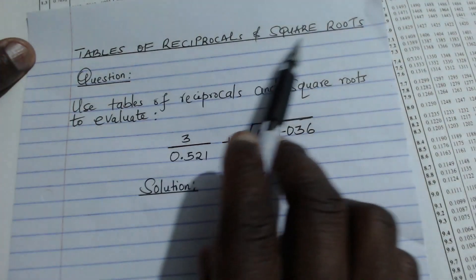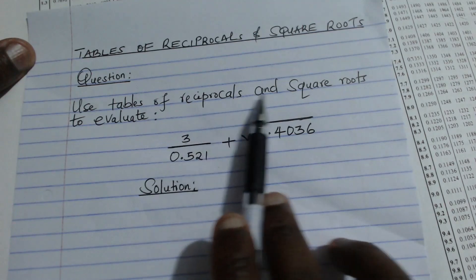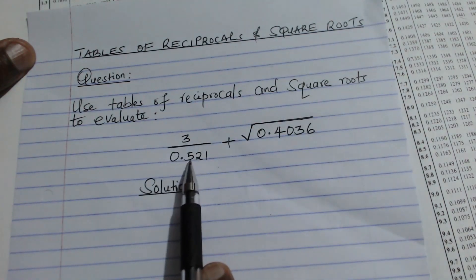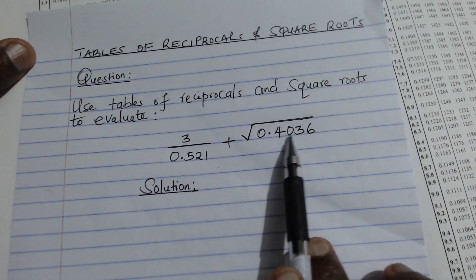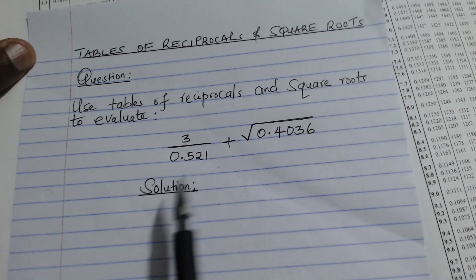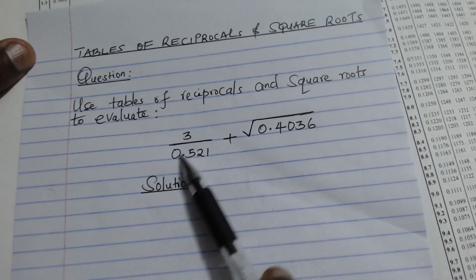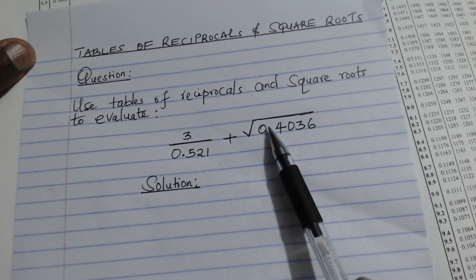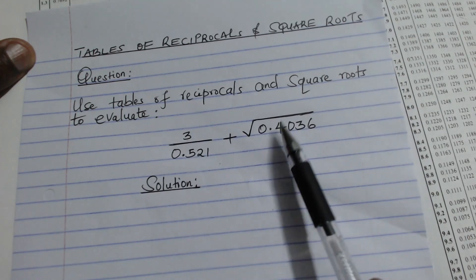The question involves tables of reciprocals and square roots. We need to evaluate 3 divided by 0.521 plus the square root of 0.4036. We'll begin by getting the reciprocal for the first term and use the square root tables for the second term.